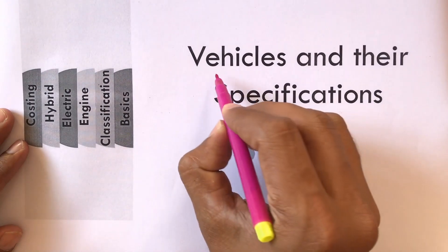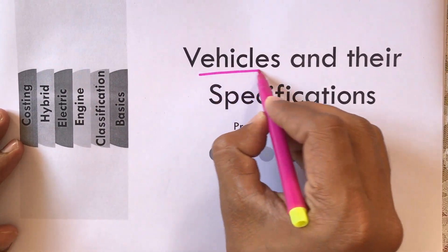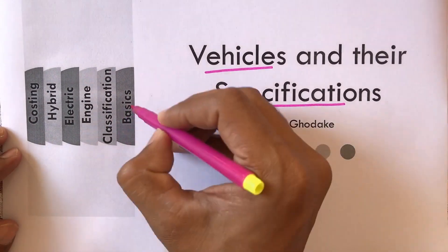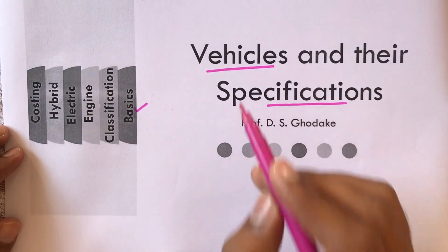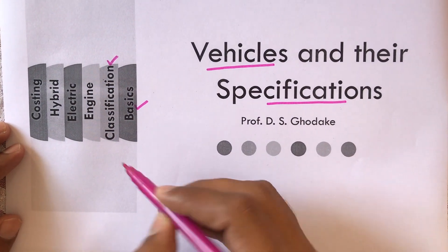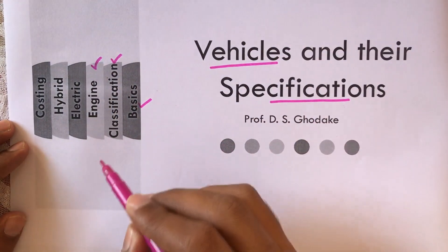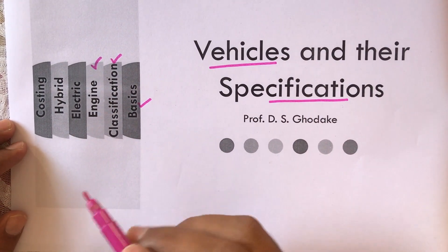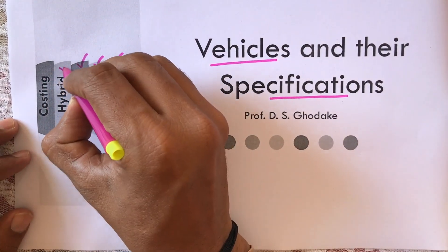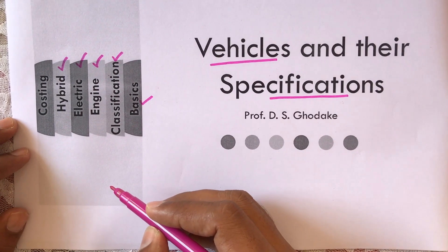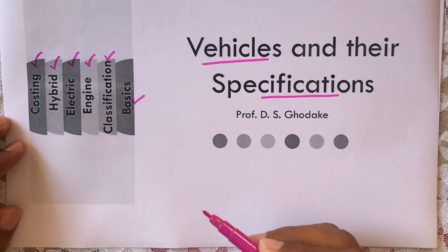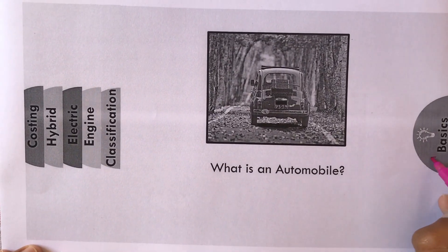In the coming few lectures we are going to study a few things related to vehicles and their specifications. We will cover basic terms related to vehicles, classification of vehicles, engine and engine specifications along with nomenclature, introduction to electric vehicles and hybrid vehicles, and lastly how the costing of any vehicle is done. Now let us start with the basics related to vehicles.